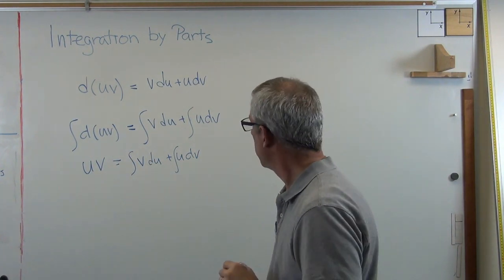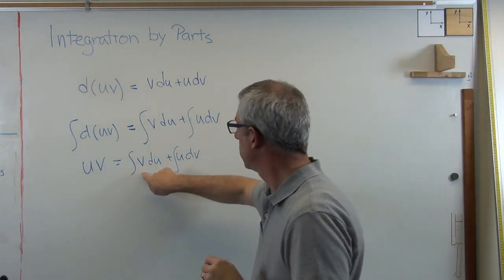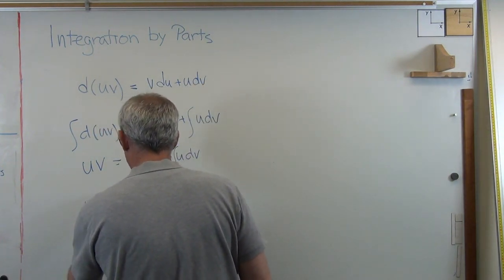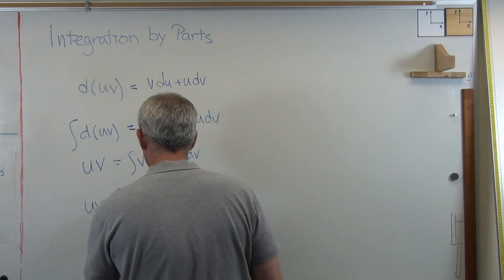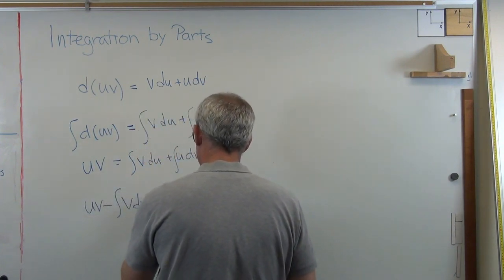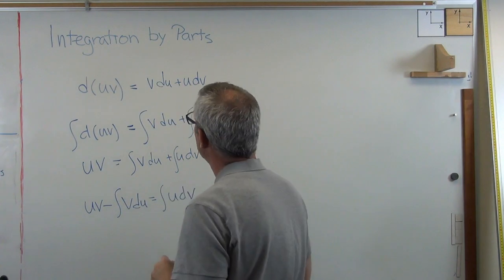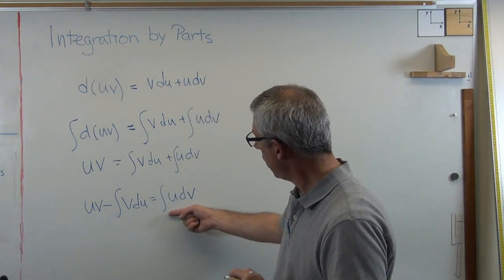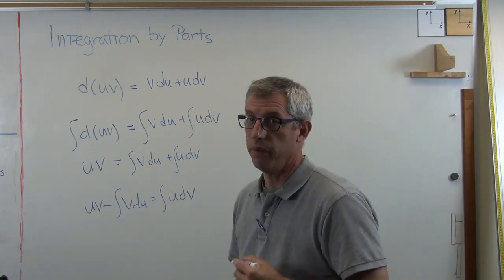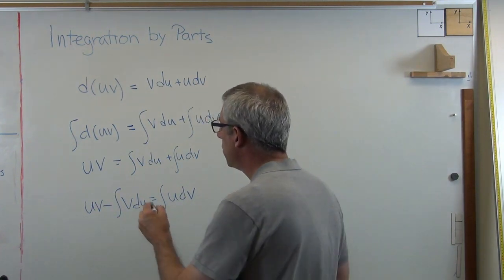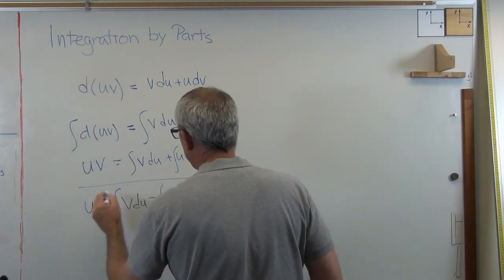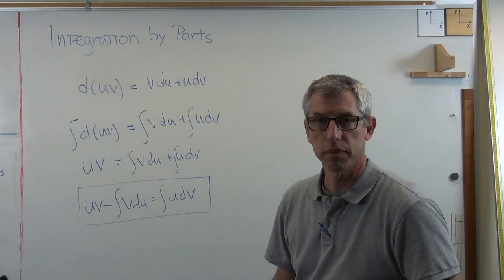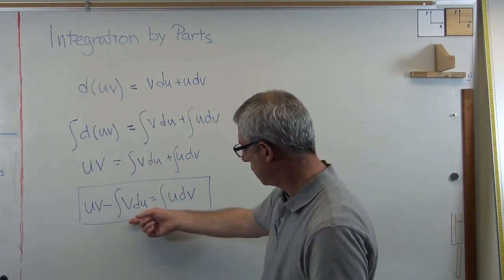V du U dV. Last thing I'm going to do is I'm going to subtract that from both sides. U V minus integral of V du equals integral of U dV. All righty. Well, that looks to me like the chain rule. Integral of U dV equals U V minus V du. That's it. That's where it comes from. So that's the chain rule, or not the chain rule, that's integration by parts. So that's where integration by parts comes from.